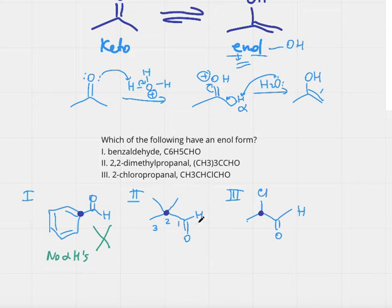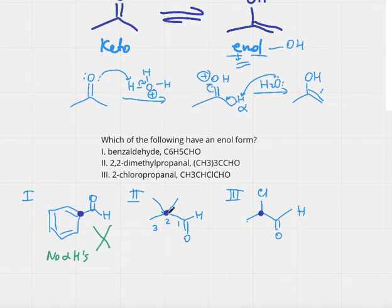For choice number two, let's clarify: the hydrogen directly on the C double bond O is not an alpha hydrogen — the alpha hydrogen is on the carbon next to the C double bond O. Here, that alpha carbon is connected to four other carbons, so it has four bonds and therefore no hydrogens. Since there are no alpha hydrogens in this molecule, it is also not capable of forming an enol.